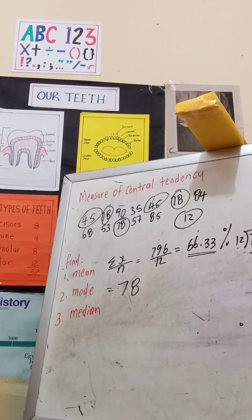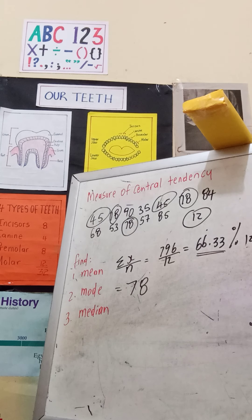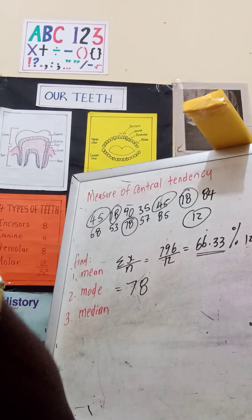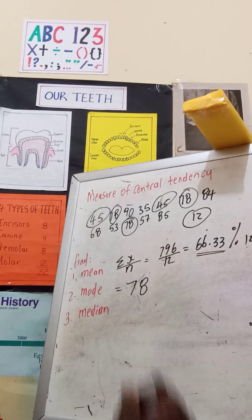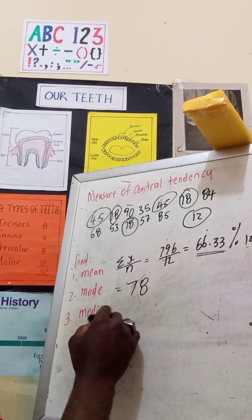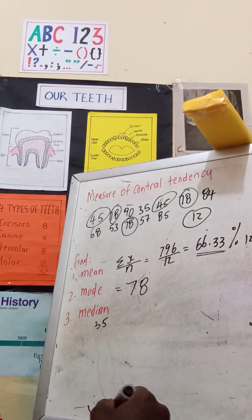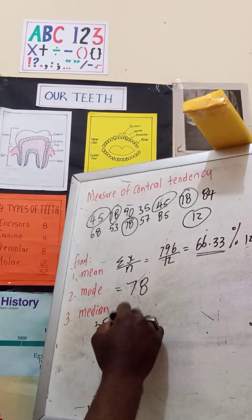In order to find the median, you will have to arrange your numbers in numerical order from largest to biggest or biggest to smallest, whichever one you want to use. We could start from smallest to largest. Smallest we have is 35, then we have 45, then 53, then 57.